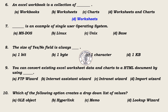7. Dash is an example of single user operating system. A. MS DOS, B. Linux, C. Unix, D. Base. Answer: A. MS DOS. 8. The size of yes or no field is always: A. One bit, B. One byte, C. One character, D. One KB. Answer: A. One bit.